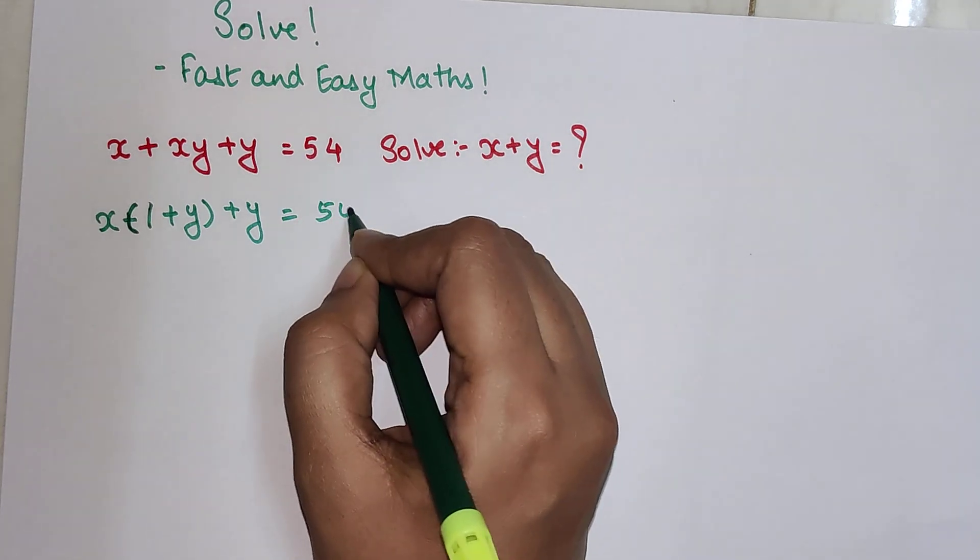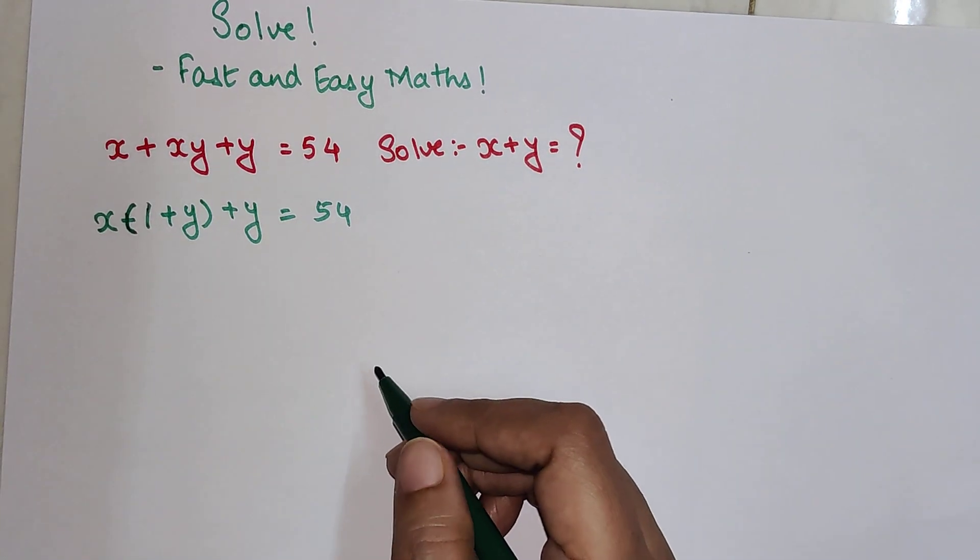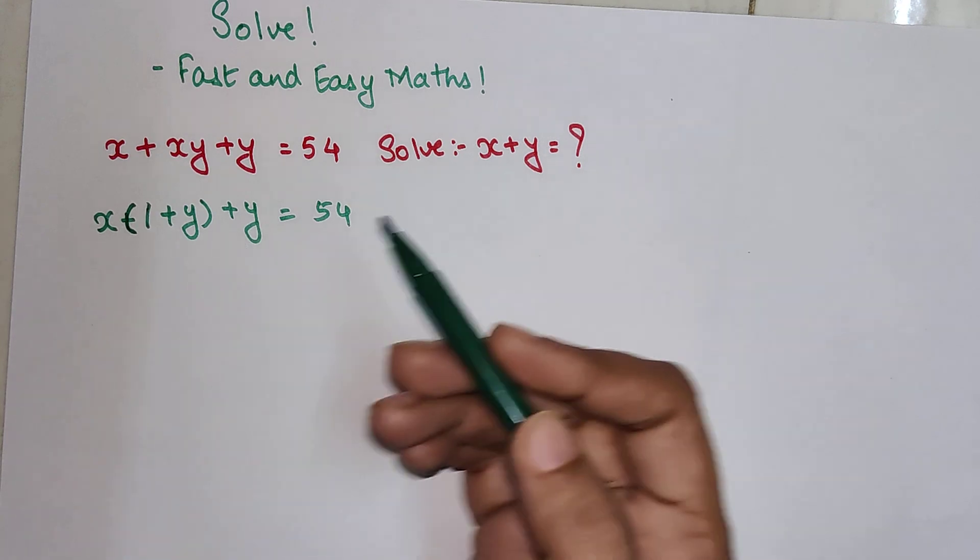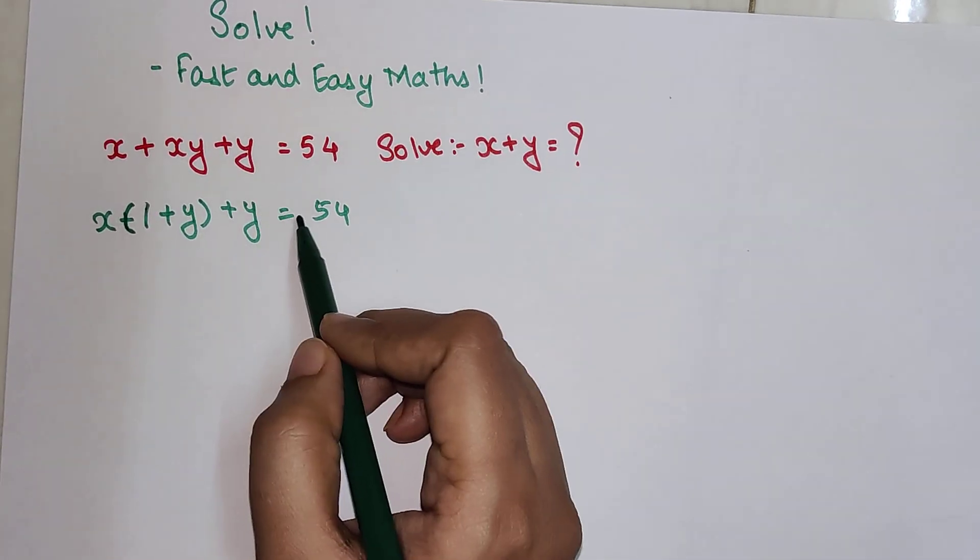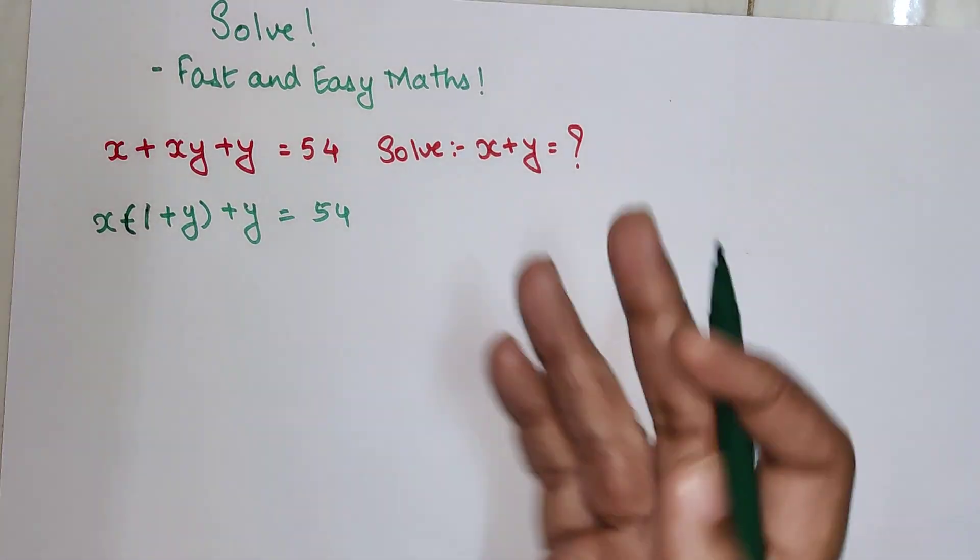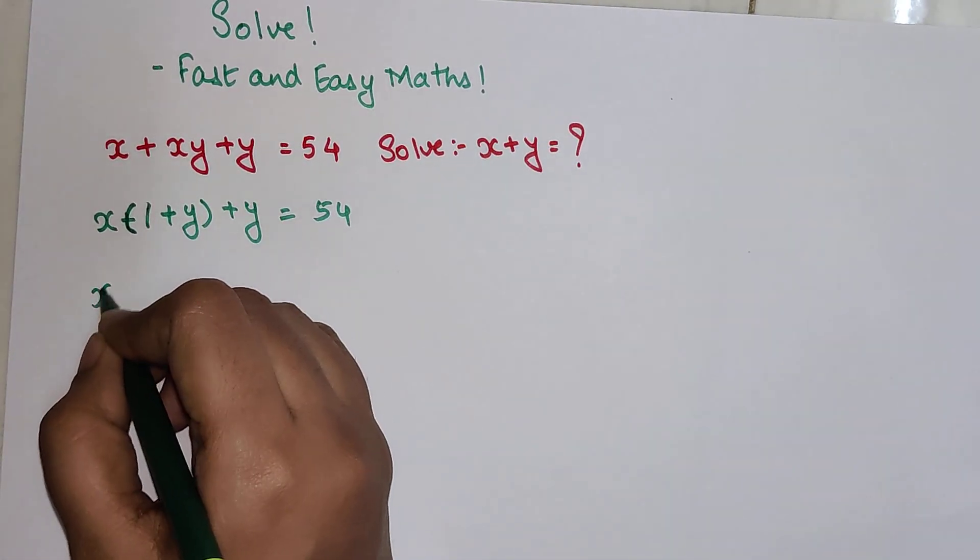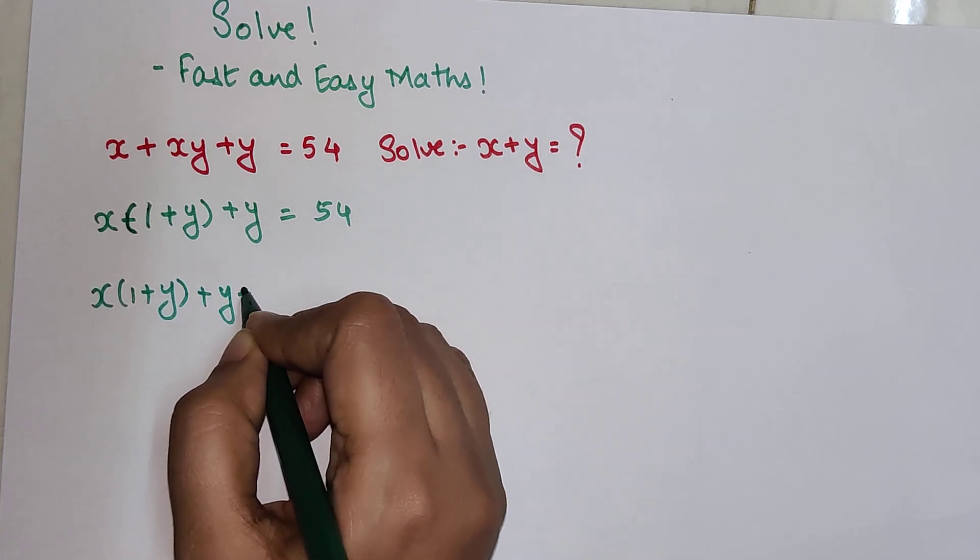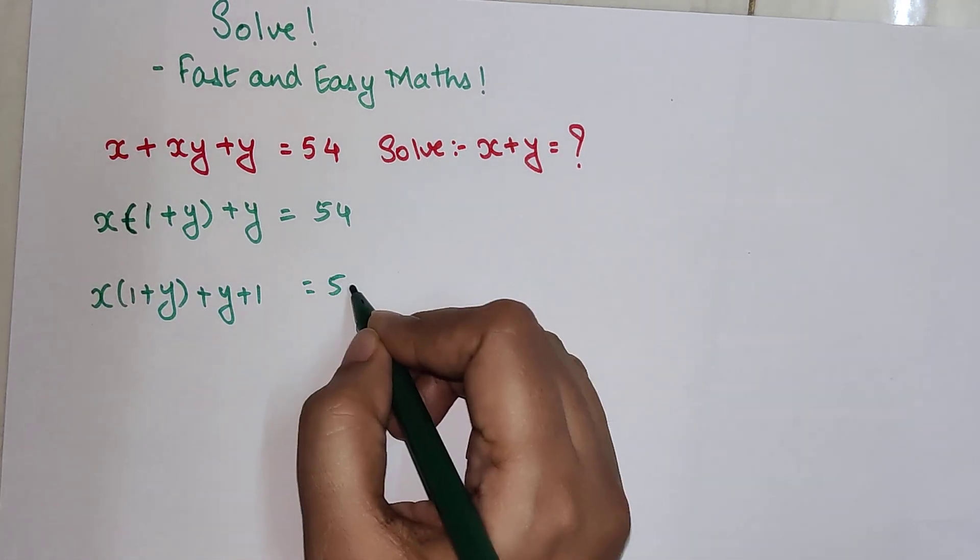Now the problem here is we have x and then we have (1 + y) and then we have just y. What if we had a y + 1 over here? Then things would have become very easy, right? So can I add a 1? Yes, I can, provided I add 1 on both sides. So this becomes 55.